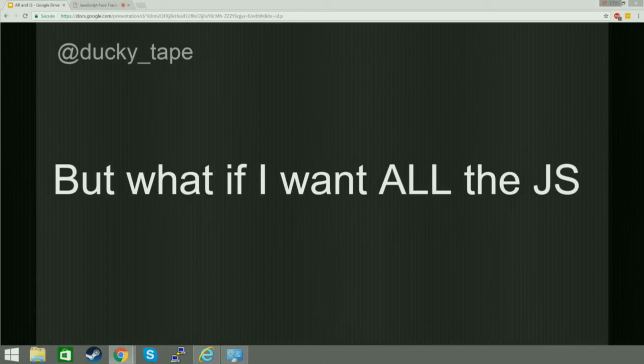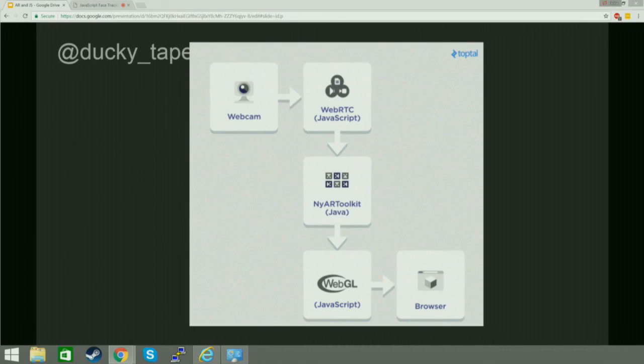What if you want to do it all in JS? Well, it's really hard. There's not really one library that does everything. There's something called GWT that isn't strictly JavaScript but apparently transpiles your Java code into JavaScript, so it helps you use Java libraries and JavaScript libraries together. Basically: you've got the webcam via WebRTC, use NyARToolkit — which is a Java library for ARToolkit — and then put that into WebGL, which is JavaScript. And then it's in the browser.